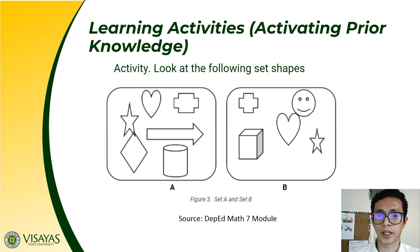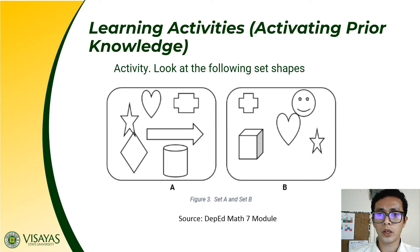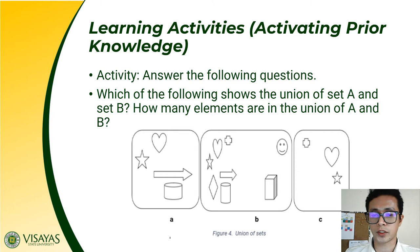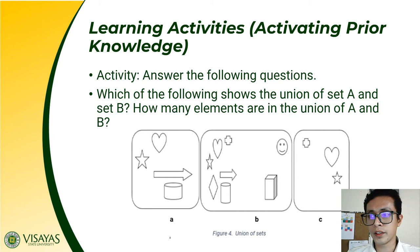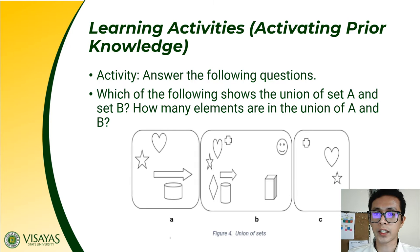Please observe the example as provided. I want you to look at the following sets of shapes — set A and set B. You may take a picture of this slide so that you will have a copy. Then answer the following questions: Which of the following shows the union of set A and set B? How many elements are in the union of set A and set B? Please answer this activity in your assessment notebook.